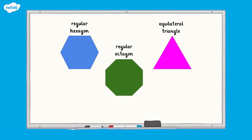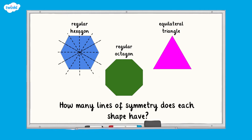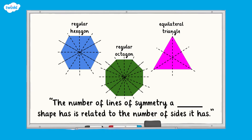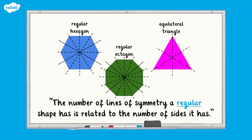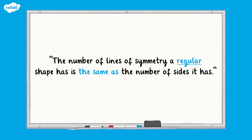Look at these regular 2D shapes. The regular hexagon has six equal sides and six lines of symmetry. The equilateral triangle has three equal sides and three lines of symmetry. And the regular octagon has eight equal sides and eight lines of symmetry. One important word was missing in our earlier statement — we need the word 'regular'. The number of lines of symmetry a regular shape has is related to the number of sides it has. Therefore, the number of lines of symmetry a regular shape has is the same as the number of sides it has.